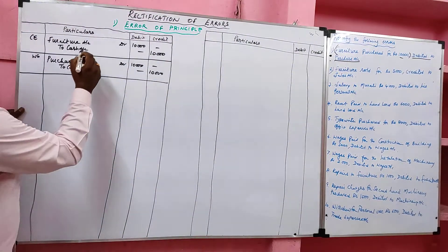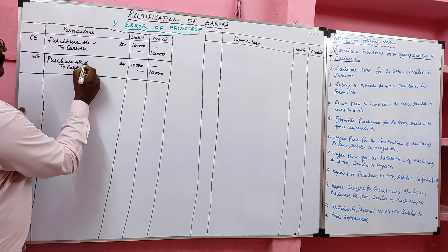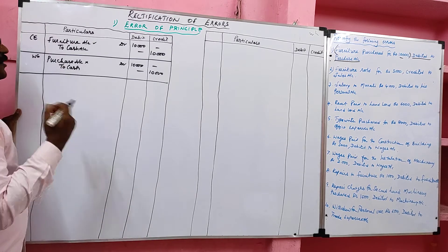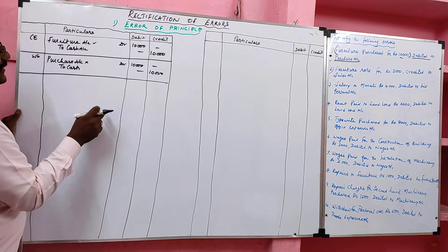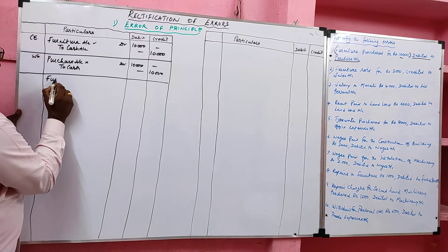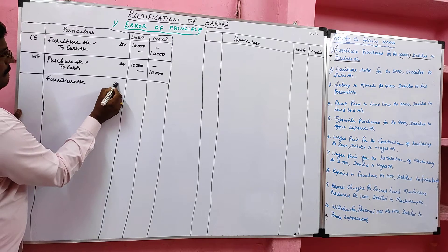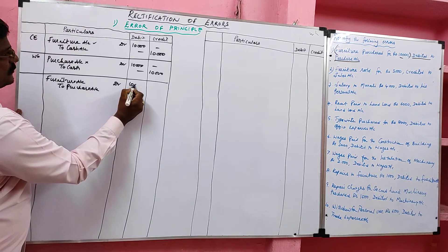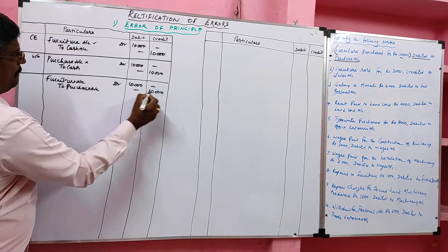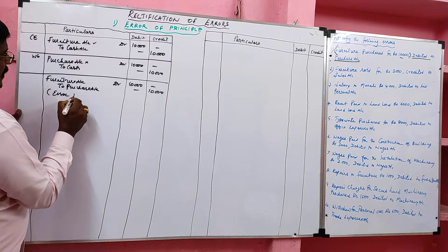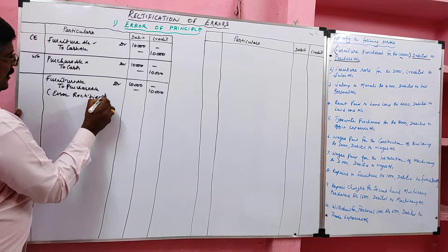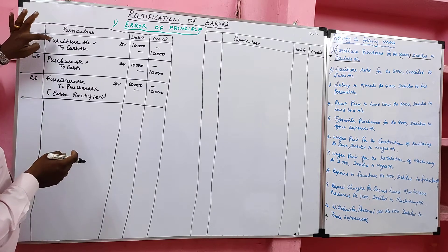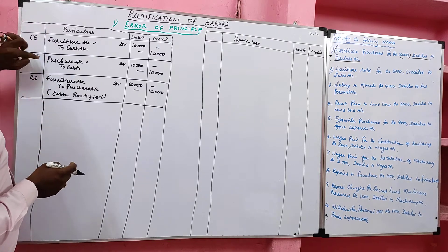To rectify: the correct posting is furniture, the wrong posting is purchase. To remove purchase, it should go to the credit side. So the rectified entry is: furniture account debit to purchase account, value 10,000. Narration: error rectified. Correct entry was furniture to cash; wrong entry was purchase to cash, so we cancel purchase from debit by moving it to credit and debit furniture.